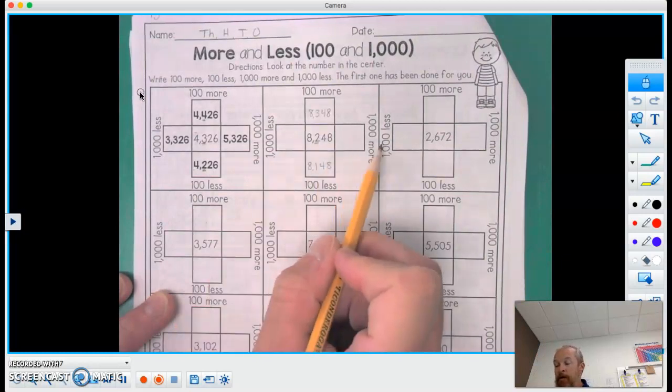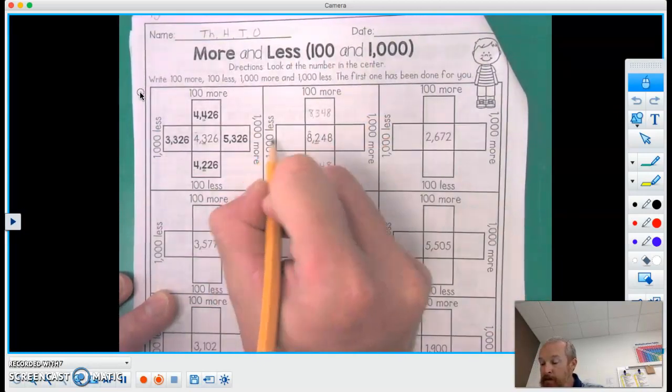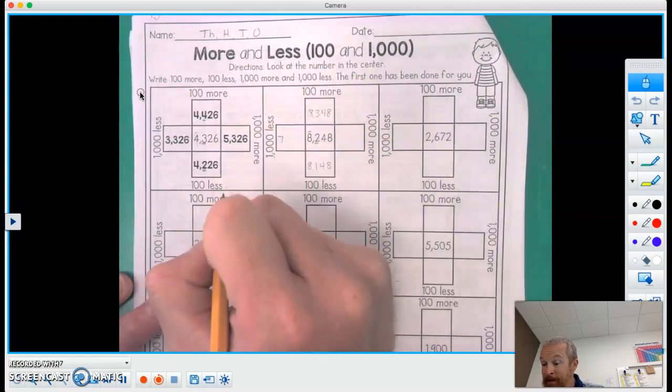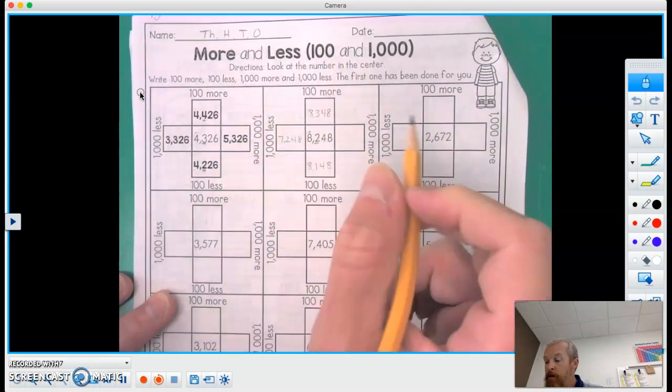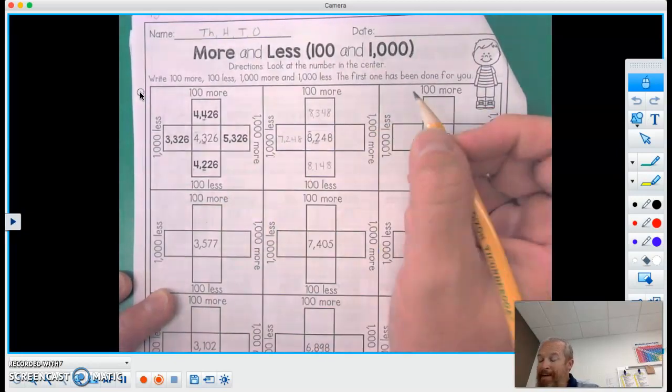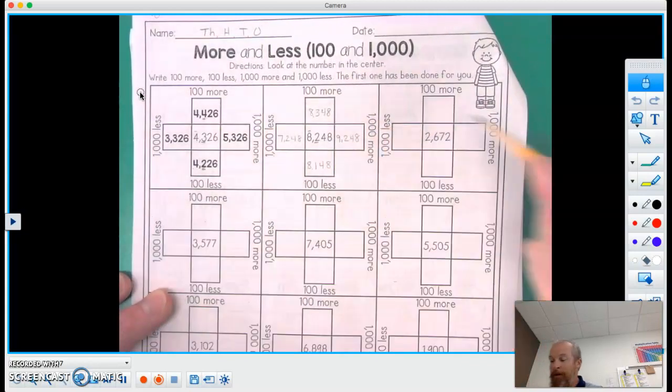And then we do the thousands column, 1,000 more, 1,000 less. This time it's the thousands column. Here's the 8. So 1,000 less would be 1 less than 8 is 7,248. And 1,000 more than 8, or 1 more than 8, 9,248.